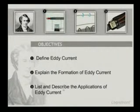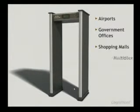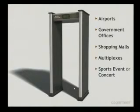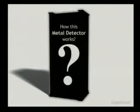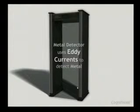First we will define the eddy current, then see how it is formed, and some applications. You might have seen this type of entrance used at security checkpoints — these are used in airports, government offices, shopping malls, multiplexes, sports events, concerts, and political meets. Metal detectors work based on the eddy current to detect metal.